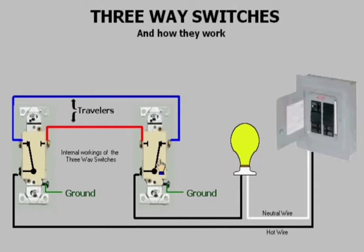Here I'll demonstrate the two three-ways in the other position. Power is fed through, travels through the first three-way across the other traveler to the second switch, and then through that three-way to energize the light.